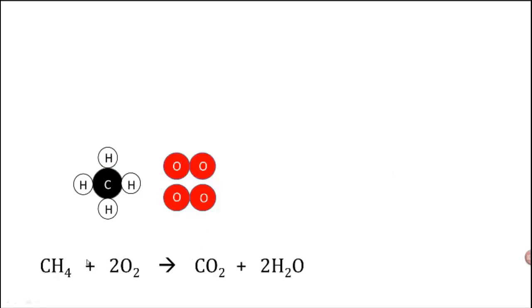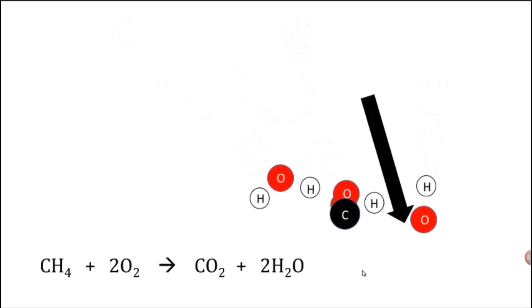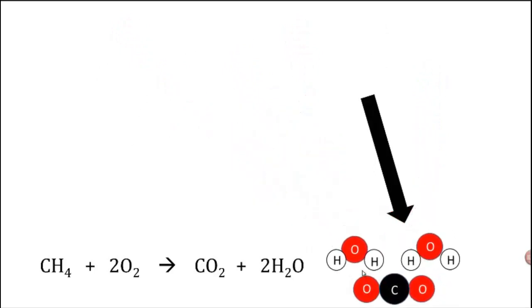This chemical reaction is the combustion of methane, which is when one molecule of methane reacts with two molecules of oxygen to give us a molecule of carbon dioxide and two molecules of water. In order for this reaction to give us the products that it does, we first need to break the chemical bonds in the reactants and then we'll get the products as those bonds form anew.